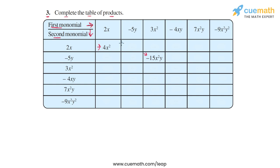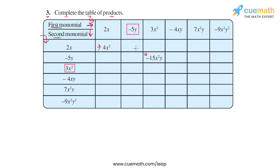We also note that the sequence of monomials in the topmost row — 2x, -5y, 3x², and so on — is the same as the sequence in the leftmost column. This means many products occur twice. For example, (-5y) × (3x²) gives the same product as (3x²) × (-5y), which we've already calculated as -15x²y. So we can fill that cell directly as -15x²y, and in a similar manner fill many other cells directly.